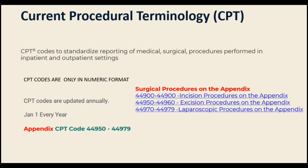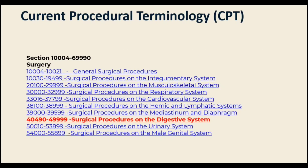For example, appendix CPT codes range from 44490 to 44979. Codes 44490 to 44799 cover incision procedures on the appendix. Code 44950 is for appendectomy — removal of the appendix. These appendix codes are taken from the digestive system chapter.